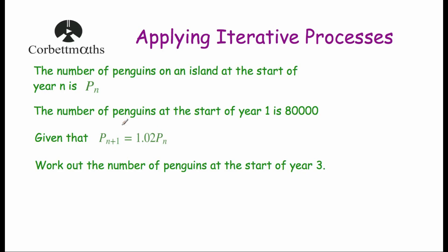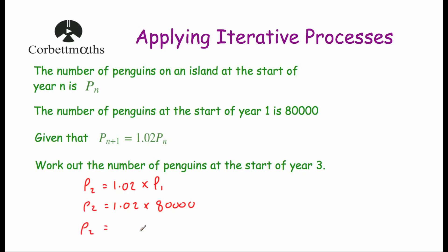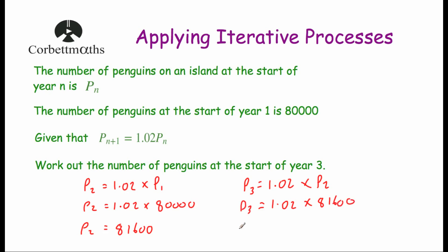This iterative formula says that to get the number of penguins in the next year, you multiply the number of penguins at the start of that year by 1.02. We know the number of penguins in year 1 is 80,000. So the number of penguins at the start of year 2 would be 1.02 times 80,000, which gives us 81,600. Then the number of penguins at the start of year 3 would be 1.02 times 81,600, which equals 83,232.